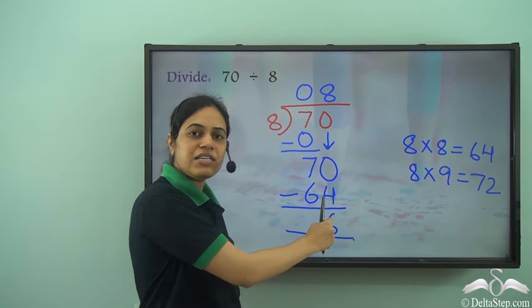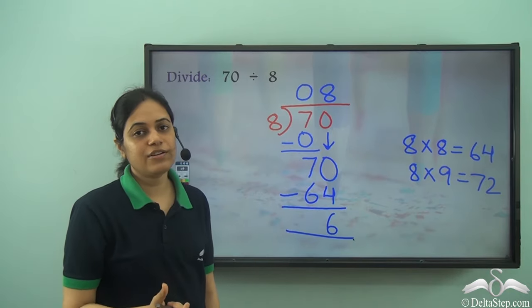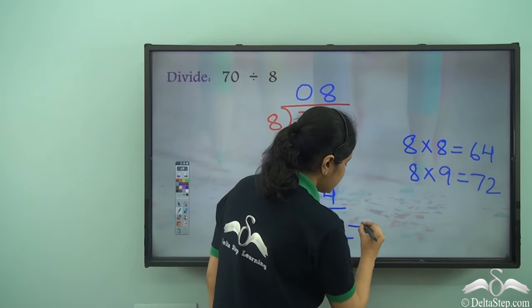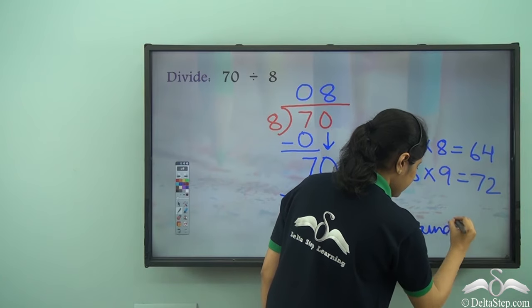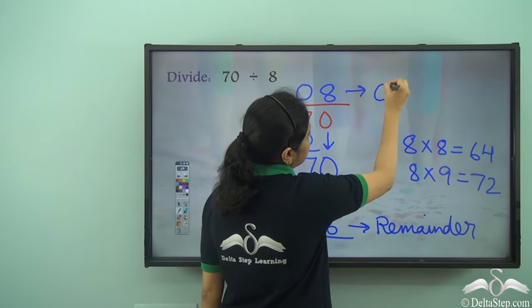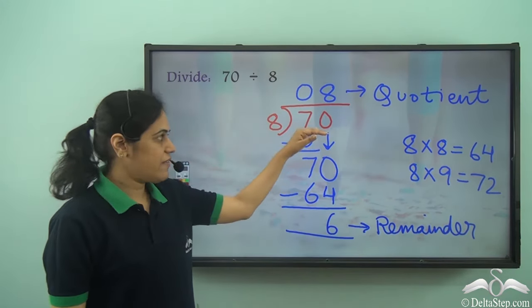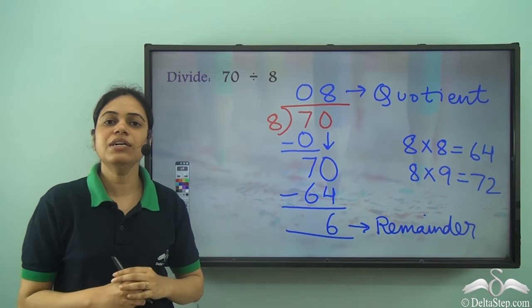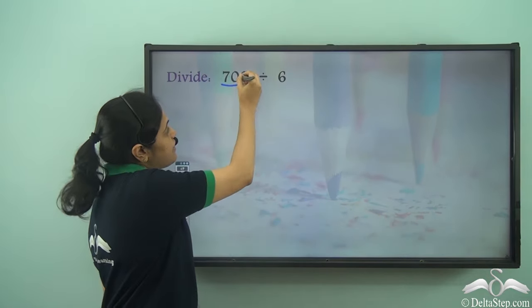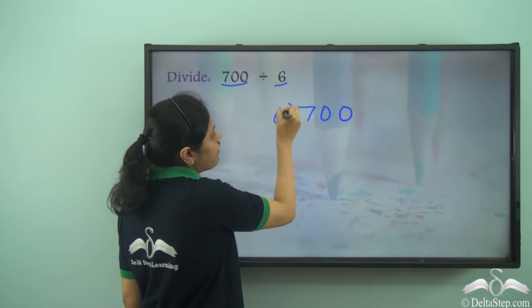I need to stop the division here. After I have taken down the last digit — the ones digit — and done the division, I need to stop, whether or not I am getting 0 at the end. This 6 is the remainder and 8 is the quotient of my division. 70 is the dividend, 8 is the divisor. Now let us divide 700 divided by 6 — a 3-digit number divided by a 1-digit number.